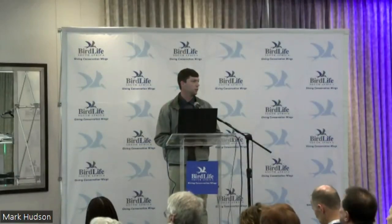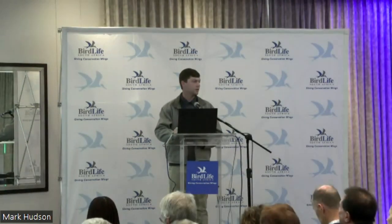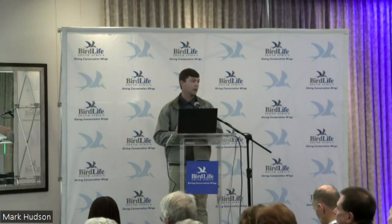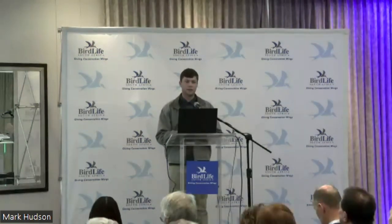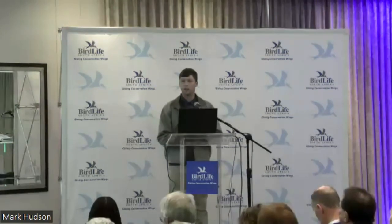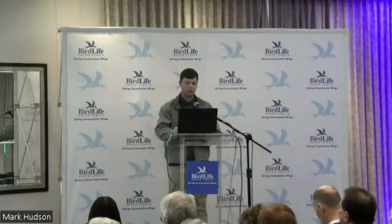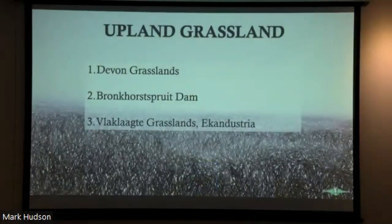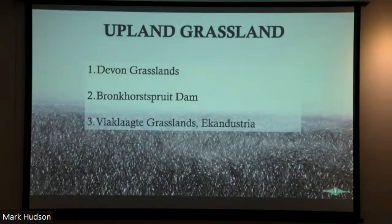Secondly is the grasslands around Bronkhorstspruit Dam, more east of Pretoria — really superb birding destination supporting a lot of good endemics. Sadly much of the land is private, so you typically need access to private farms, but access can be arranged. Lastly, the Ekandustria grasslands around that area are also north of Bronkhorstspruit. All these sites are largely in a line north to south east of Joburg and Pretoria, and the further east and south you go, the habitat remains the same with all the same species.